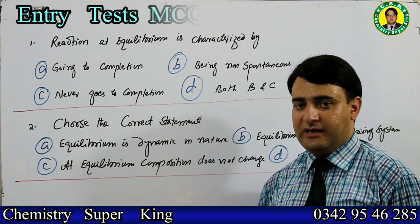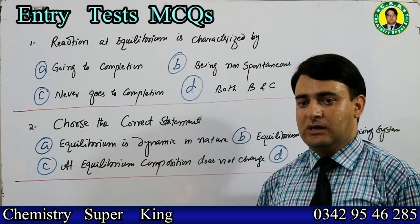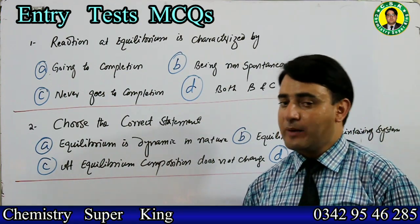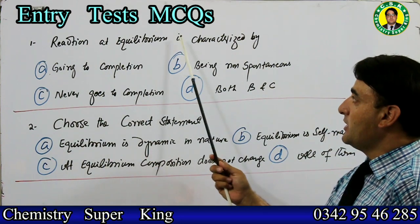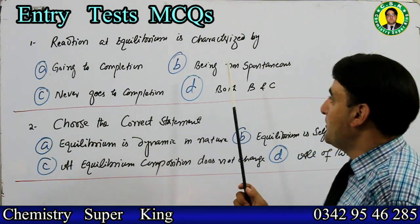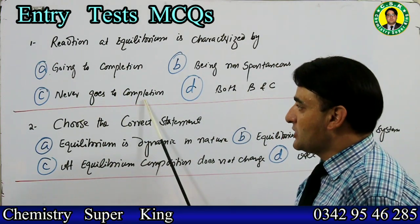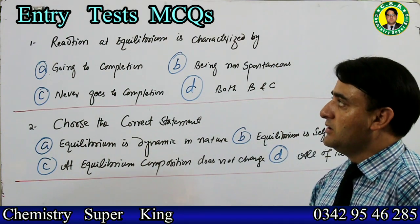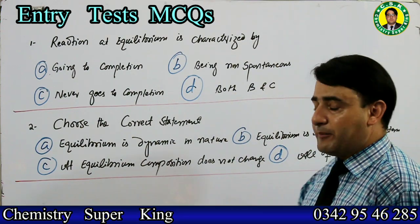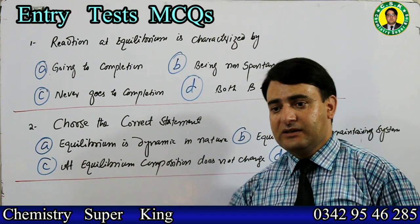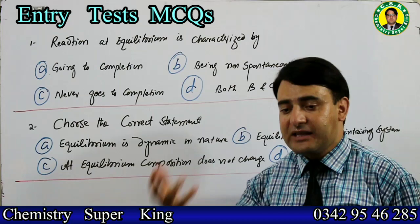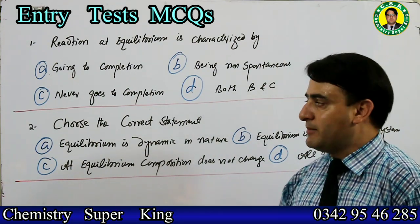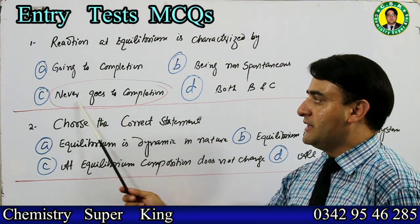Let's solve equilibrium MCQs - first try yourself, then see if you are correct, and let me know in the comments. MCQ: A reaction at equilibrium is characterized by: going to completion, being non-spontaneous, never goes to completion, or both B and C. Remember: at equilibrium, the reaction never goes to completion. It cannot be characterized as non-spontaneous either. So the correct option is: never goes to completion.